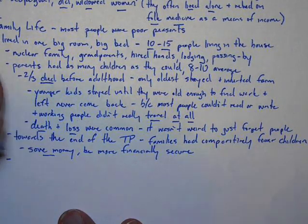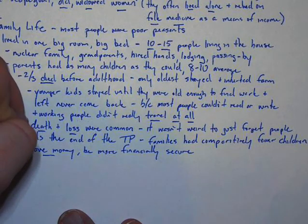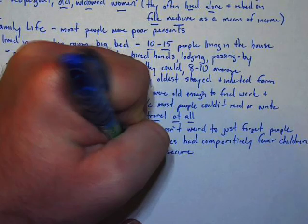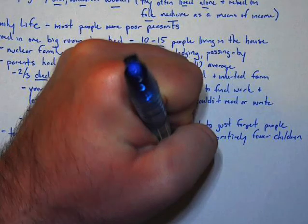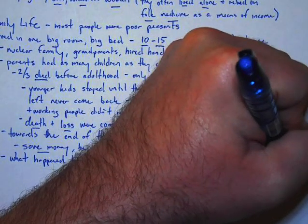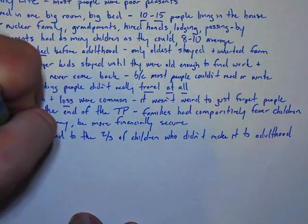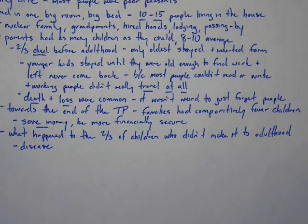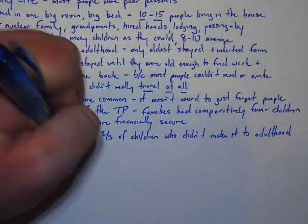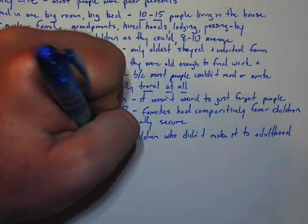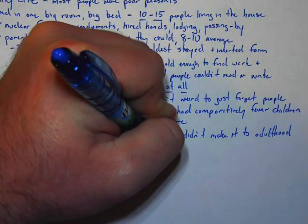Now let's talk about the kids that died - what befell two-thirds of children who didn't make it to adulthood? Obviously, the biggest killer of children was disease. Children died of disease all the time, that was not weird. But there were lots of other reasons too. For example, neglect was a big killer of children. There were no babysitters - you still needed to work.